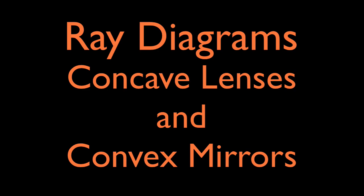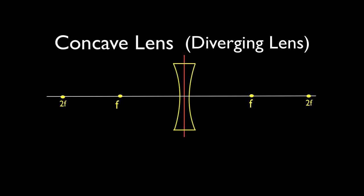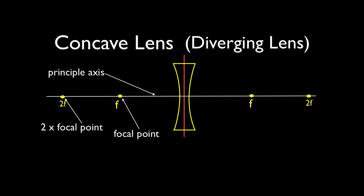In today's video I'm going to go over how to draw ray diagrams for concave lenses and convex mirrors. This is the general diagram we're going to use. One of the important parts of this diagram is the principal axis — it runs right through the center of the lens in the horizontal direction. Then we have F and 2F. F is the focal length, a distance from the lens, and 2F is twice as far away, two focal lengths from the lens.